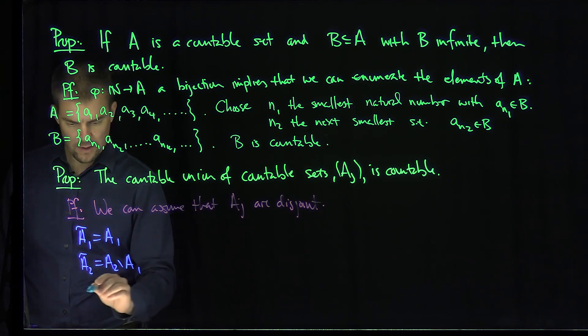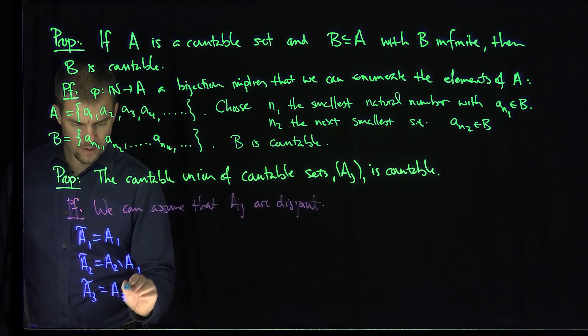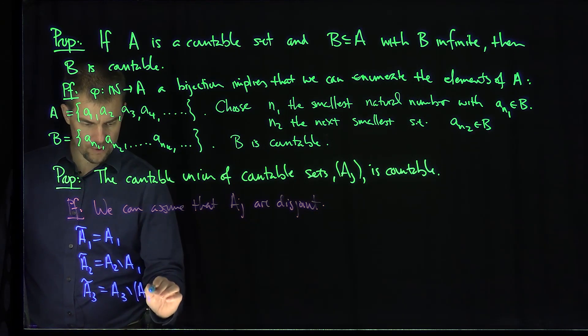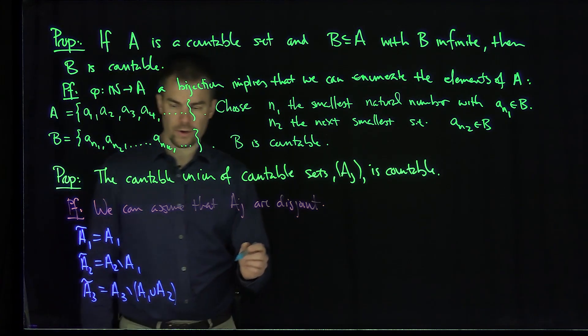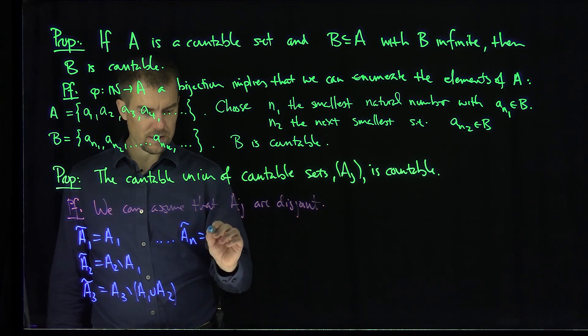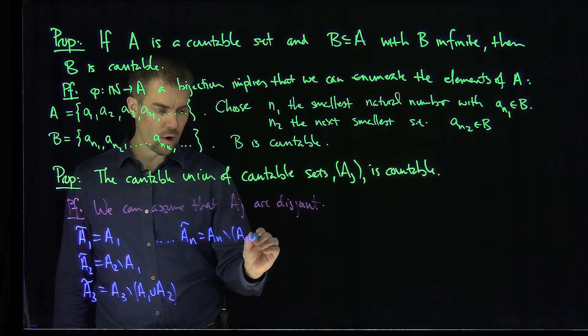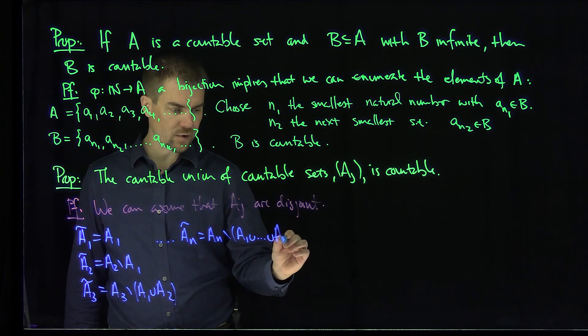I can define A3 tilde to be A3, take away everything that was in either A1 or in A2. And so in this way, I can sequentially: A_N tilde is A_N, so get everything in A_N that just wasn't in what? A1 union all the way up to A_N minus 1.